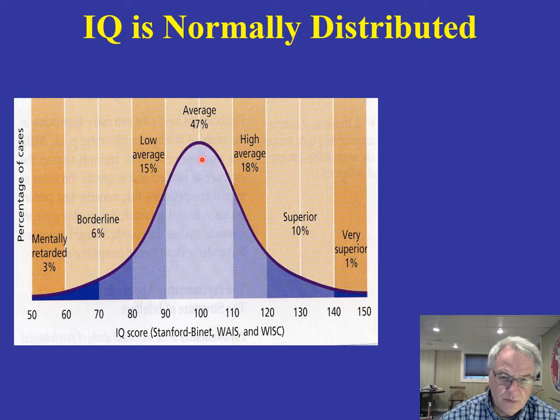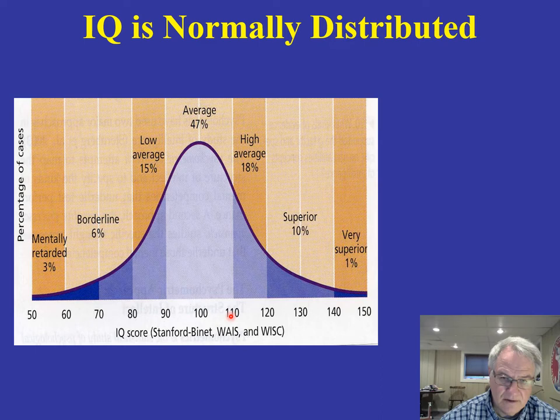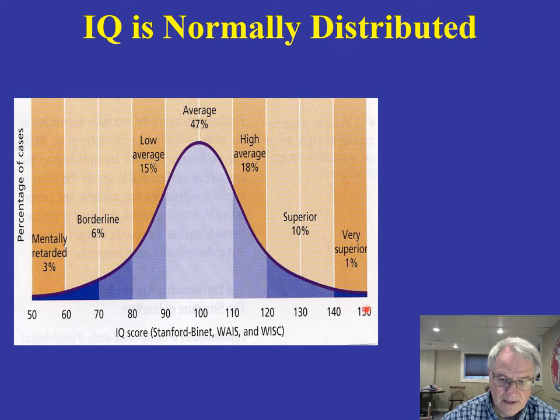47% of individuals are average. The bulk of individuals are scoring between 90 and 110, which is considered to be average. If you include low average and high average, you're really talking about somewhere in the neighborhood of over two thirds of individuals. Very few individuals are at the extremes, either very low or very high.